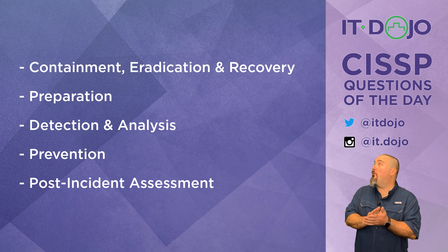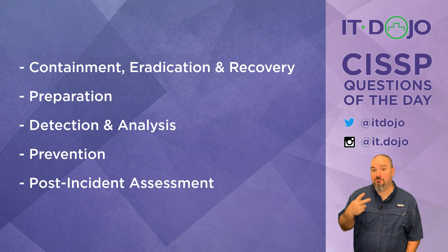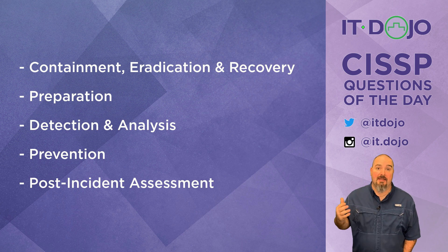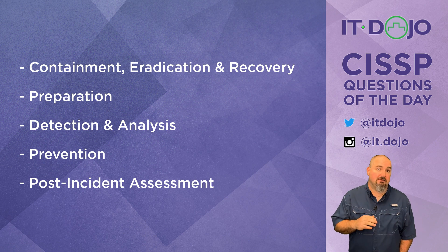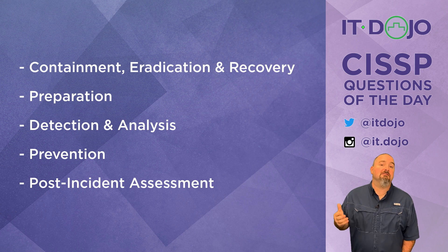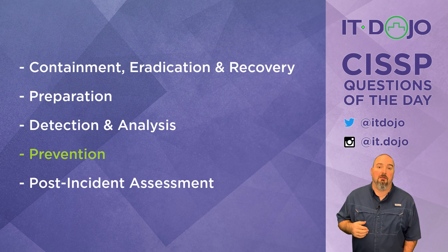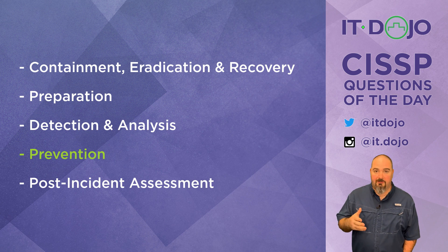The four phases of the incident response life cycle: phase one is preparation; phase two is detection and analysis; phase three is containment, eradication, and recovery; and phase four is post-incident activities. So the one item not included in that is prevention. Prevention is obviously important, and a lot of time and energy is spent on it, but it is not part of the incident response life cycle.